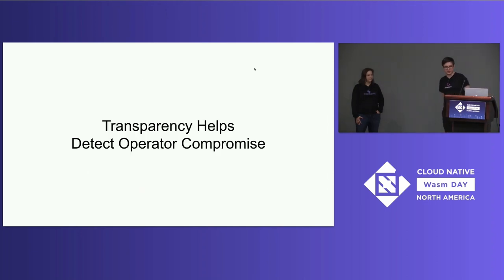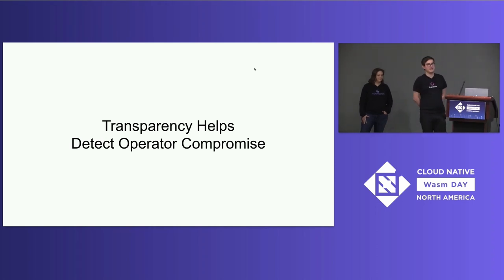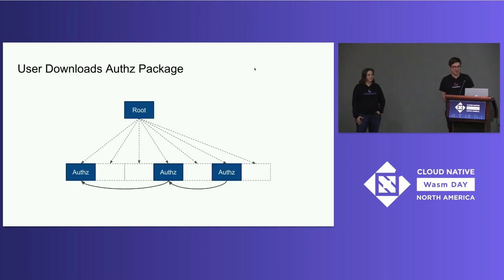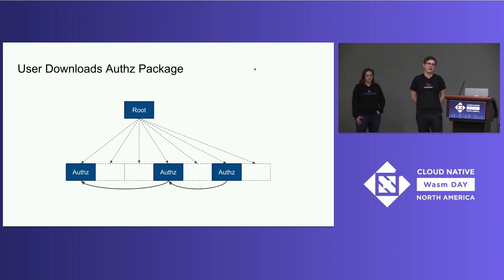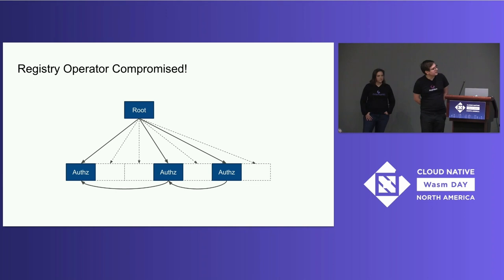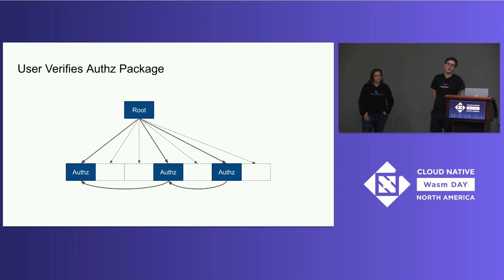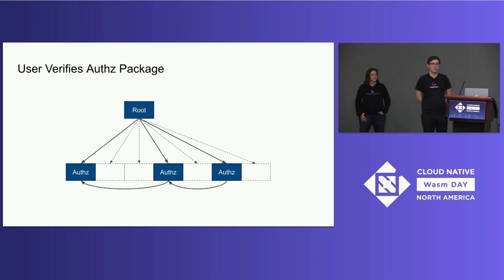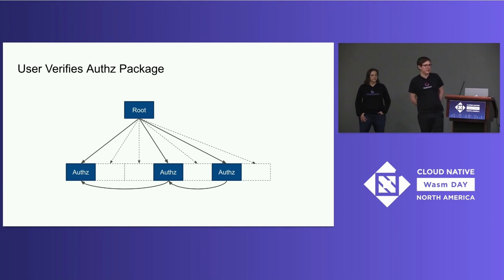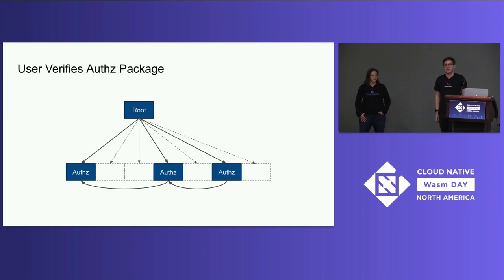The other thing we can do with this level of transparency is detect operators that are compromised and begin to behave badly, that begin to act maliciously. When you download a package like this authorization package, you get all of the records for that package as well as that root for the state of the system at the point in time you've queried it. Then what you can do — these are the bold lines you see here, representing these proofs that we can construct fairly efficiently — is show that all the package entries we see here were in the log, that everybody else is seeing them too if they have a root that's compatible with ours. This is part of the idea that if a registry lies about anything, it has to lie about everything. To change the state of one of these package entries, I have to lie about the entire state of my system, and that's really easy to catch.